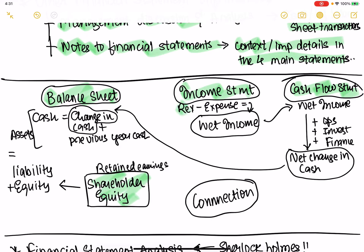If you have revenue minus expenses, you get net income. Net income from the income statement flows over to the cash flow statement. The cash flow statement starts with net income, and then you add or subtract cash flow from operations, investments, and financing, and you get the net change in cash.